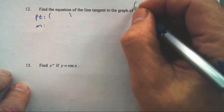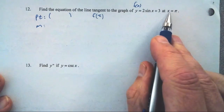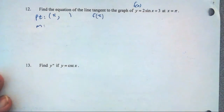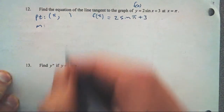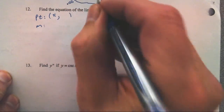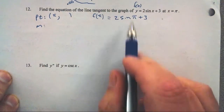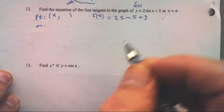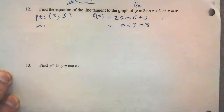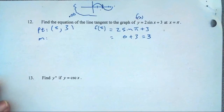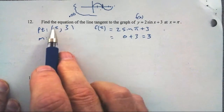If I call this f of x, I want to know what f of pi is. My point is when x is pi. So f of pi is two sine of pi plus three. Here's my little sine thought bubble: sine goes from zero to two pi, and at pi it is zero. So this equals zero plus three, or three. My point is at (pi, three).